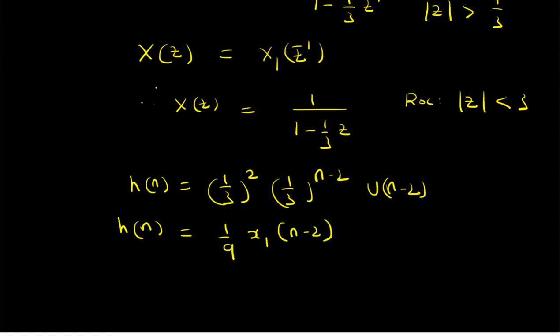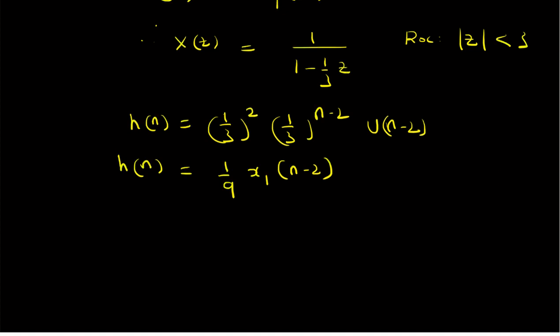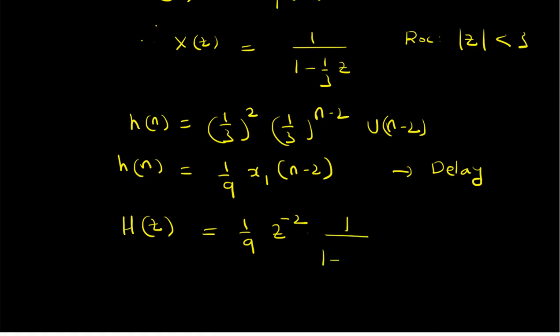Using the time delay (shifting) property of the Z transform, H of Z equals 1 by 9 times Z power minus 2 times 1 by (1 minus 1 by 3 Z inverse), with ROC: mod Z greater than 1 by 3 — the region outside a circle of radius 1 by 3. The Z power minus 2 factor does not change the ROC.